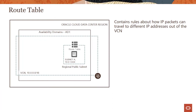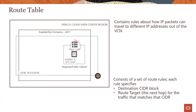A route table contains rules about how IP packets can travel to different IP addresses out of the VCN. Right here you can see there is a route table which is attached to the subnet. The route table consists of a set of route rules — each rule specifies a destination CIDR block and specifies the route target, the next hop, for the traffic that matches that CIDR.